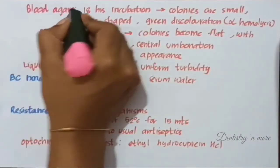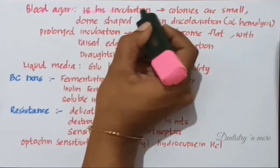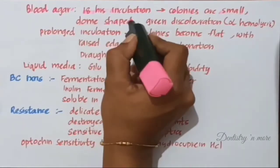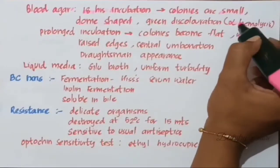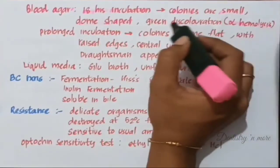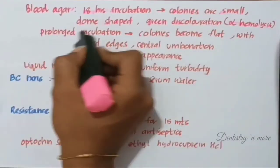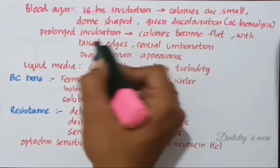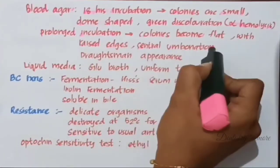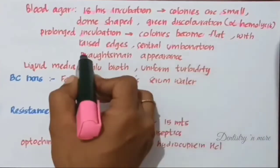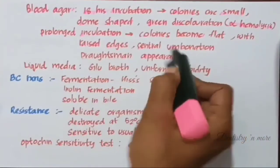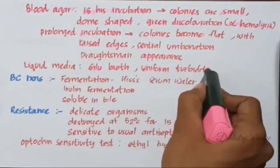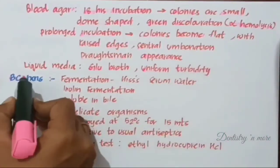On blood agar after 18 hours of incubation, the colonies appear small and dome-shaped. As they are alpha-hemolytic, there will be a greenish discoloration. After prolonged incubation, the colonies become flat with raised edges and central indentation, giving a draughtsman appearance. In liquid media like glucose broth, they show uniform turbidity.